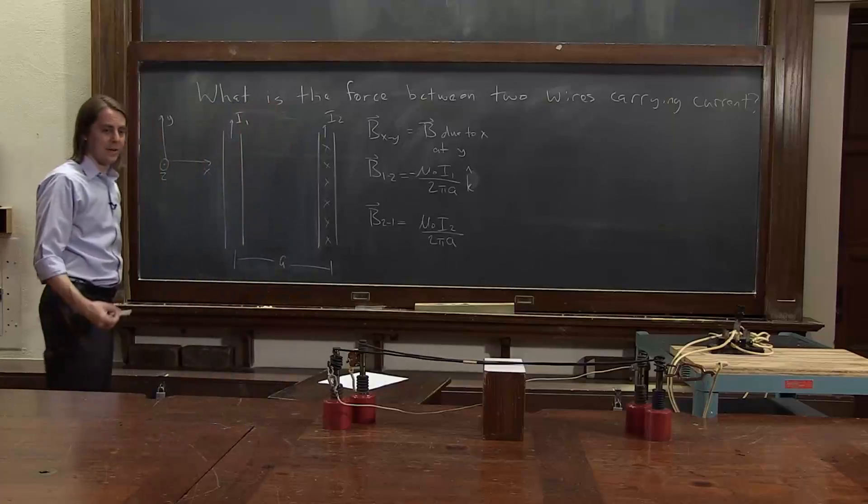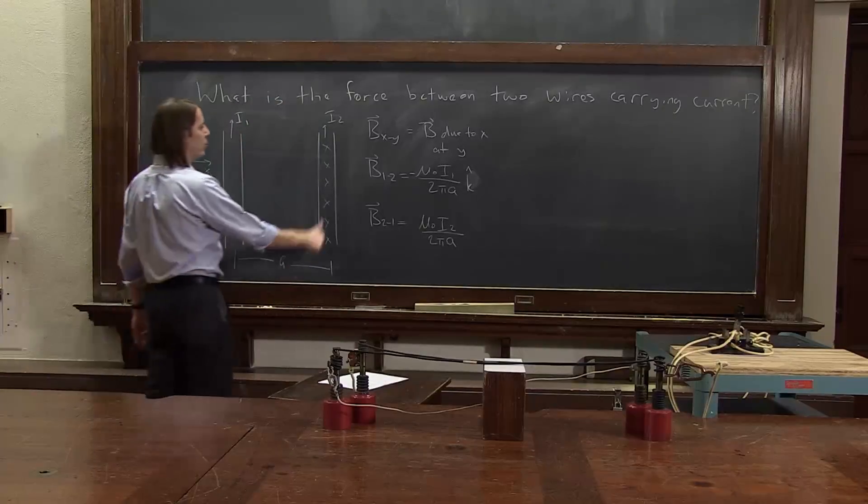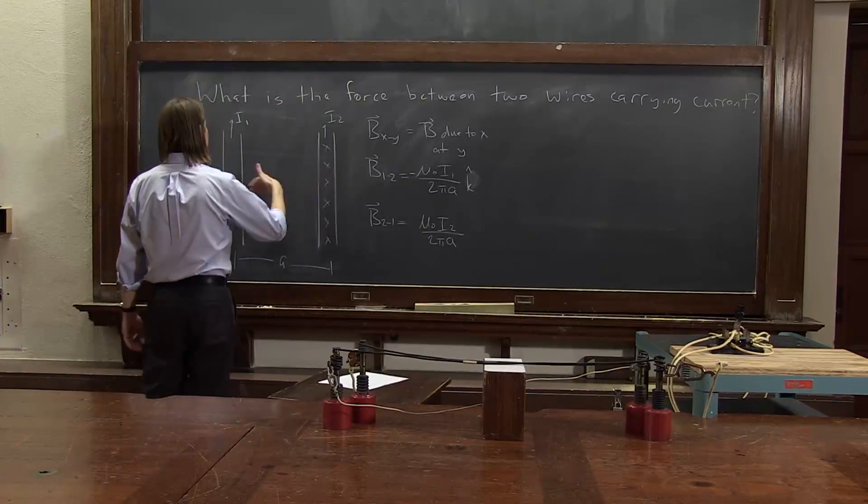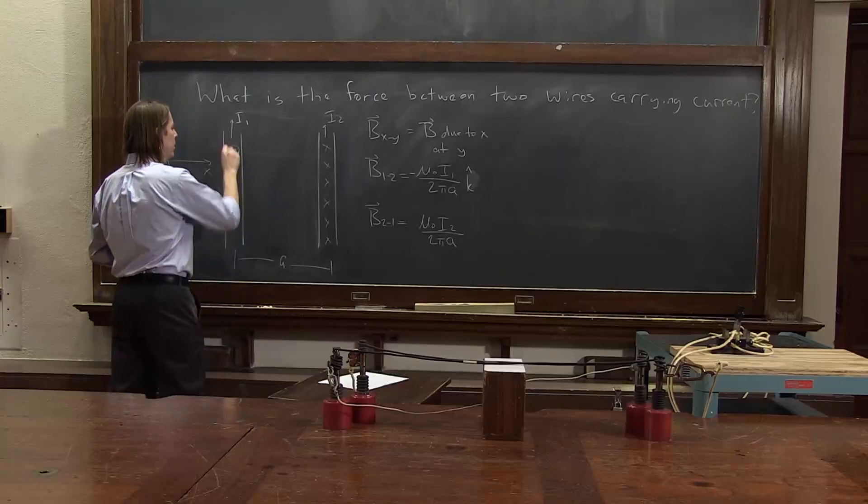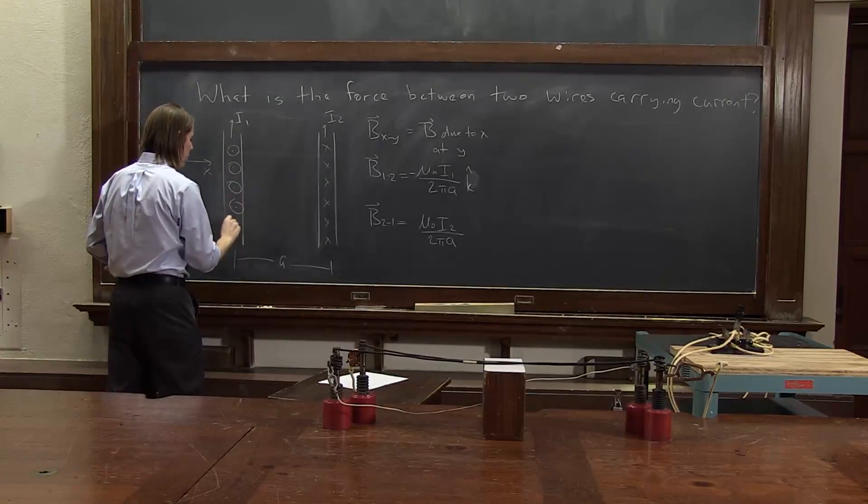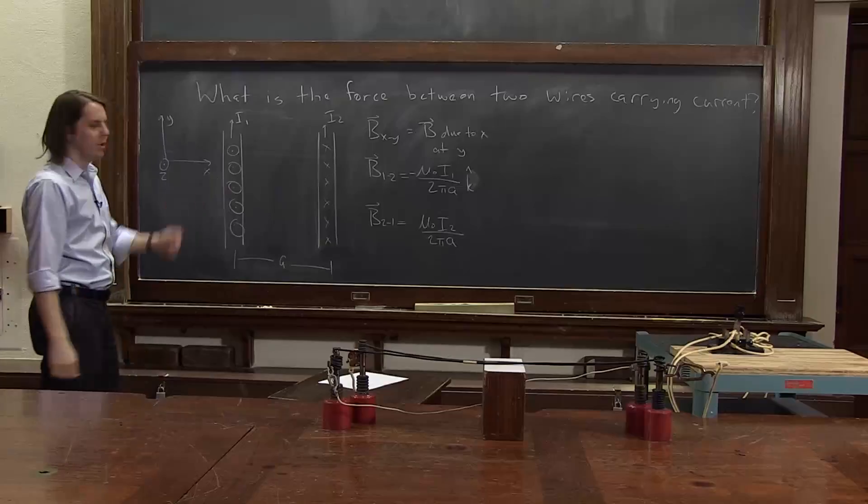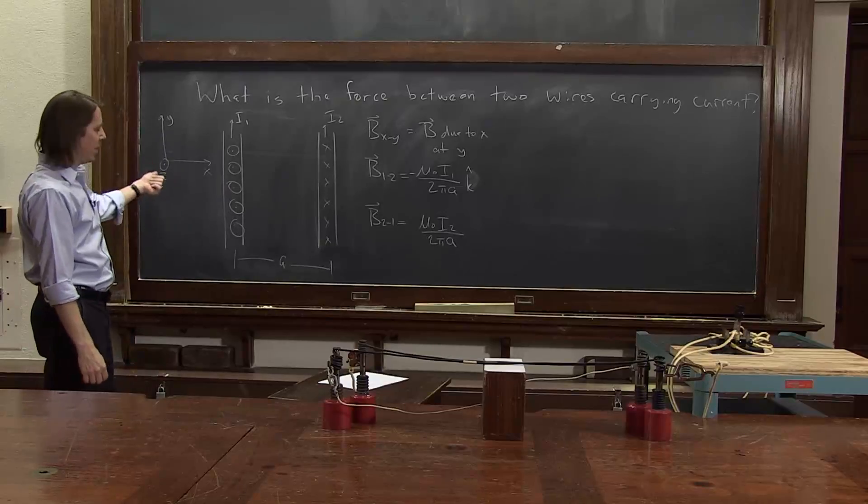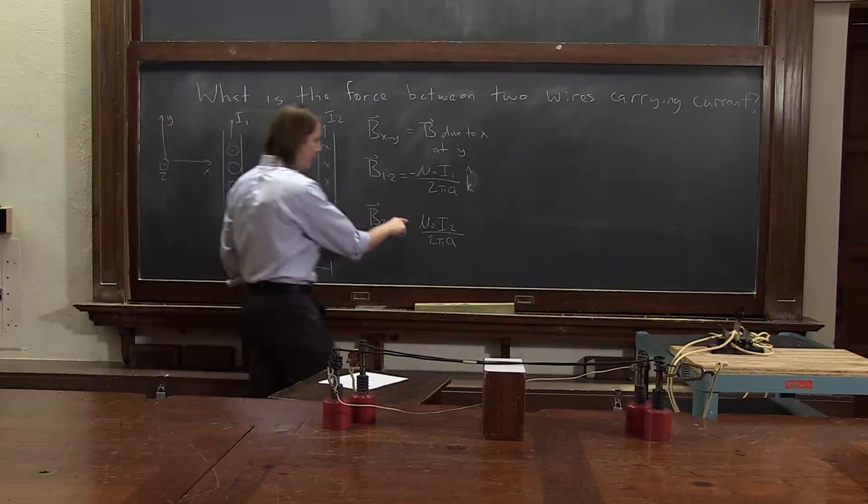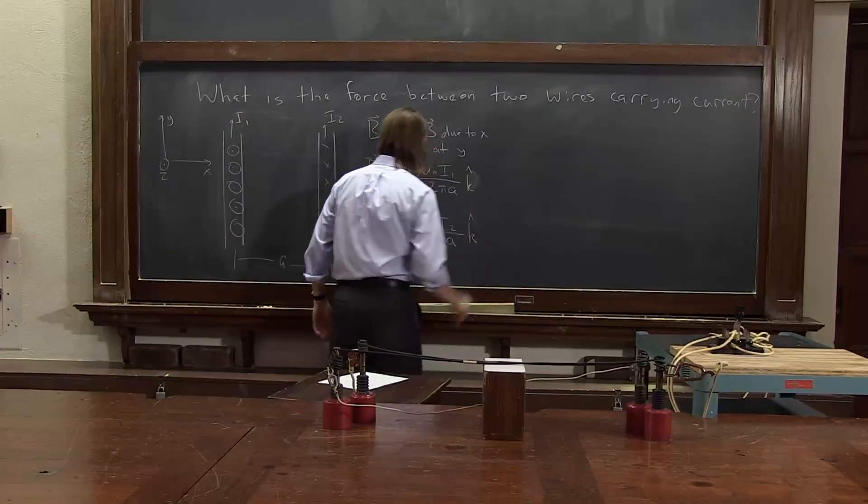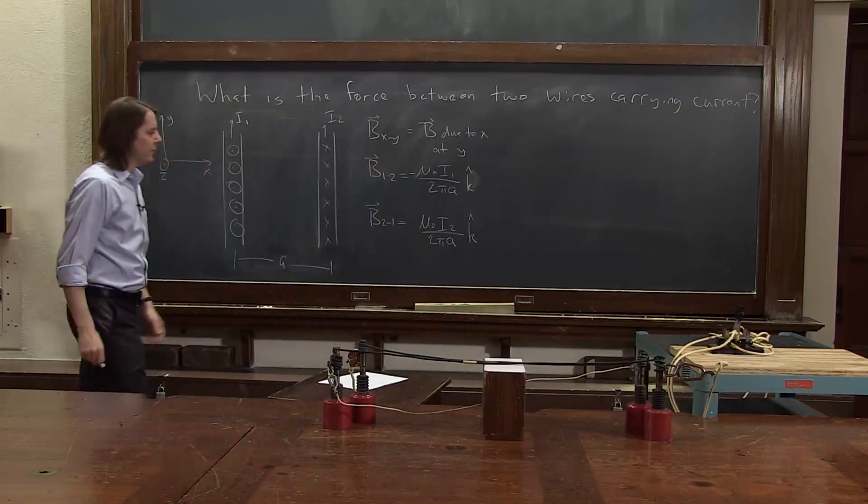Now we just see if I can actually get the direction right. Right-hand rule, thumb along i2 creates a field coming out of the board. So it's in the positive z direction, so it remains positive k-hat. So that's two magnetic fields.